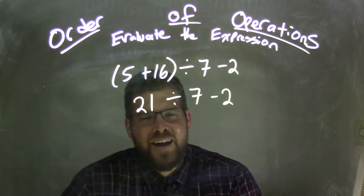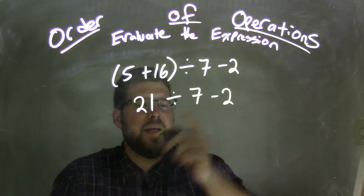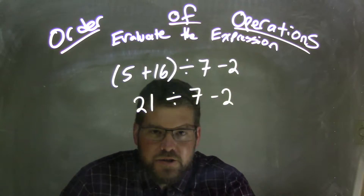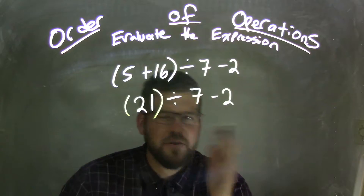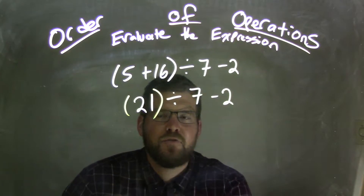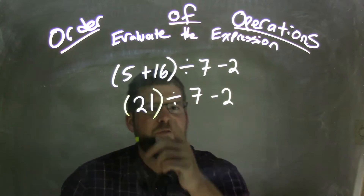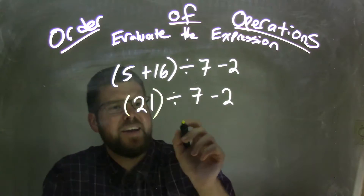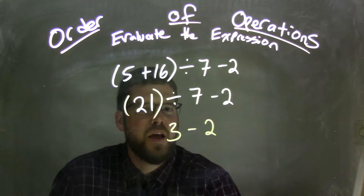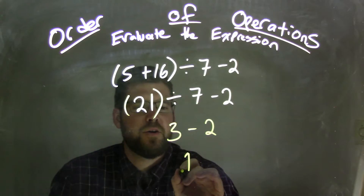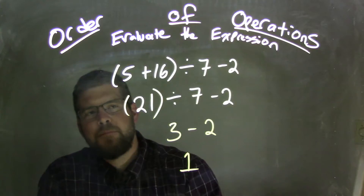So 21 divided by 7 comes first in the next step because we have division and then subtraction. 21 divided by 7 — division comes before subtraction — and that is 3 minus 2. 3 minus 2 comes out to be 1. So now we have our final answer of 1.